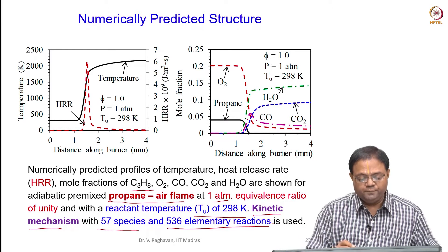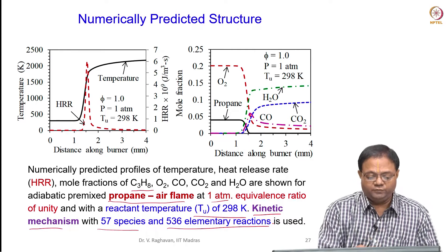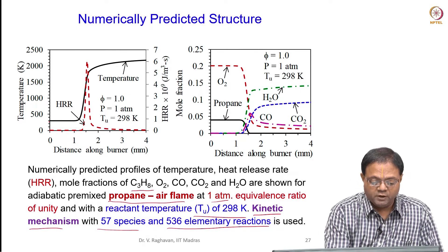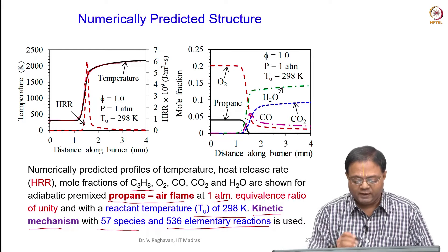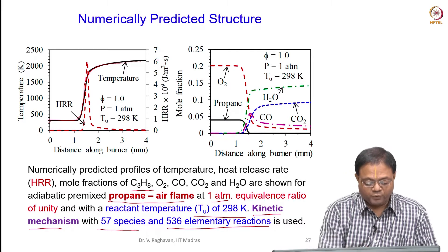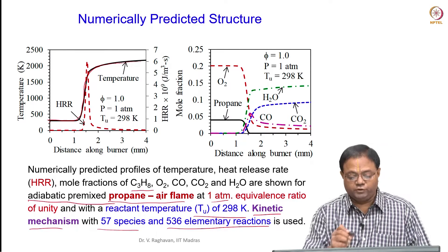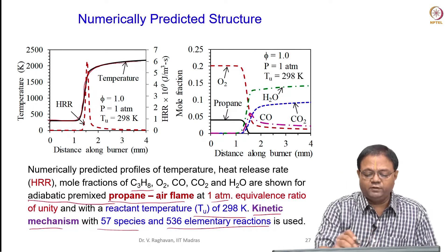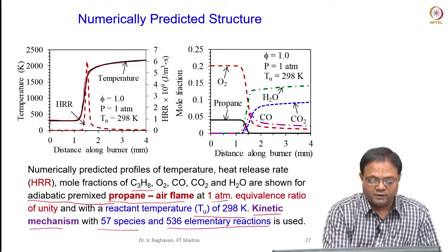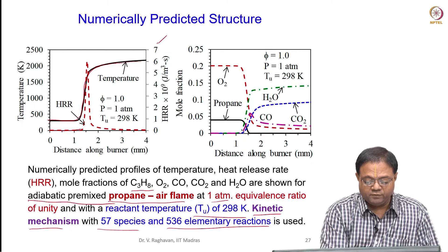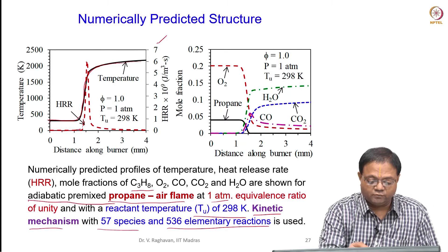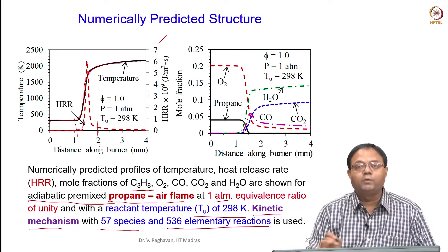If you see the profiles, in this case you can see the temperature increasing very sharply and reaching almost the flame temperature — this is an adiabatic case. So an adiabatic premixed propane-air flame is considered here. The heat release axis is on the right-hand side; the heat release is very low and sharply increases to a maximum value in the reaction zone, which is about 1 millimeter.